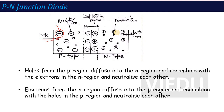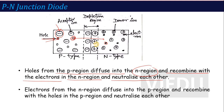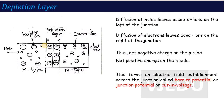When you join n-type and p-type together, holes from the p-region diffuse into the n-region and recombine with the electrons in the n-region. The diffusion of holes leaves acceptor ions on the left of the junction — these are negative ions remaining in the p-side.